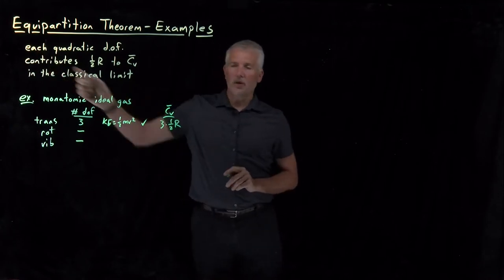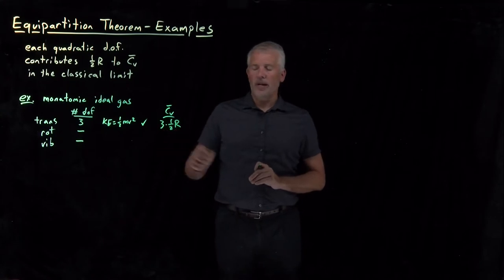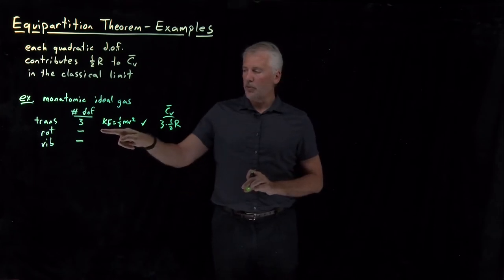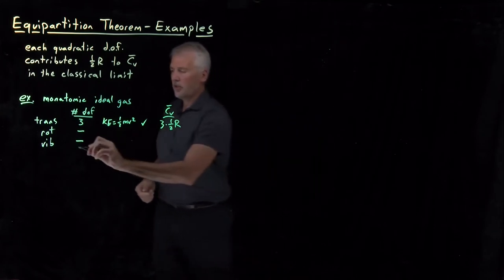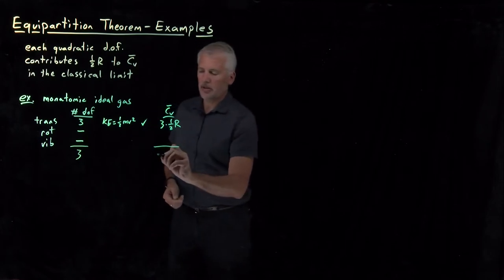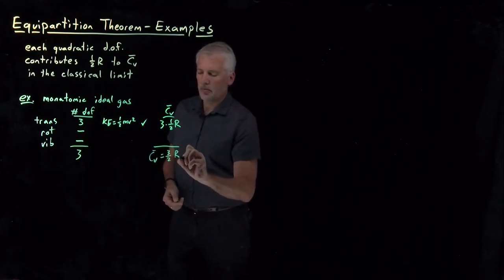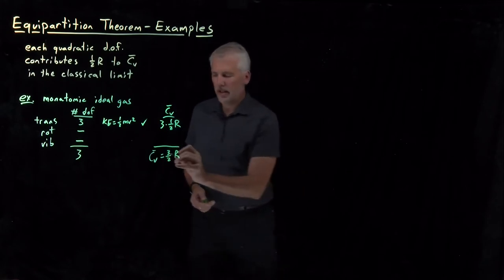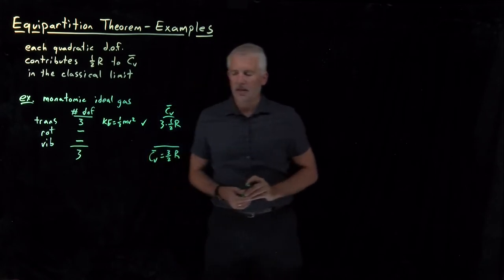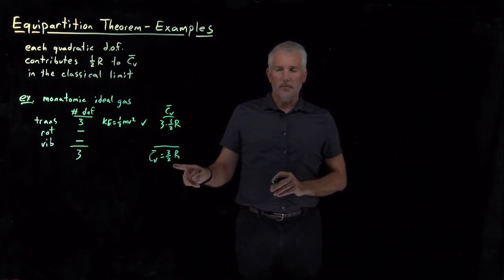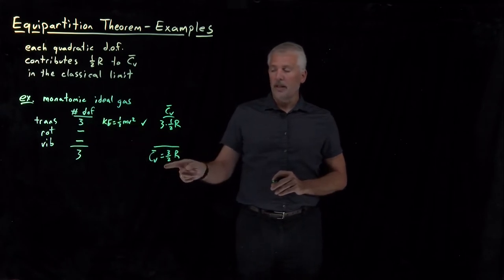Each of those quadratic degrees of freedom contributes one-half R to the heat capacity. That's the only type of energy we have — the kinetic energy — so we don't have to worry about rotations and vibrations. Summing up all the contributions gives us our prediction that matches what we've seen before: the constant volume molar heat capacity for a monatomic ideal gas is three-halves R.